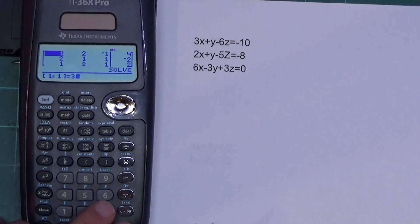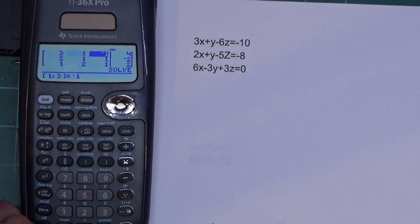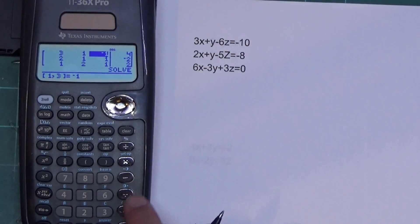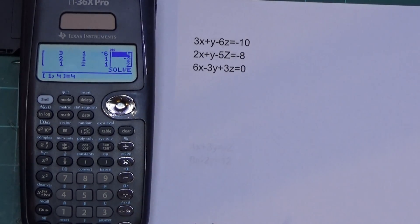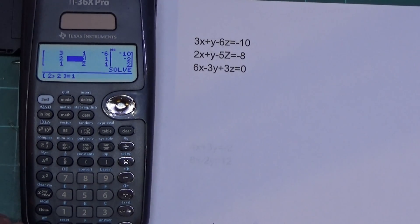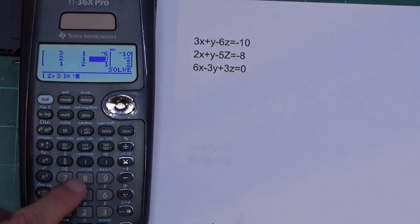So 3 by 3. Now this time I'm going to put 3, enter, 1, enter. This is negative 6. So remember, don't hit the minus button. Hit the negative button. Negative 6, enter, and then negative 10, enter. 2, enter, 1, enter, negative 5, enter, negative 8, enter. So we got the first two rows done over here.